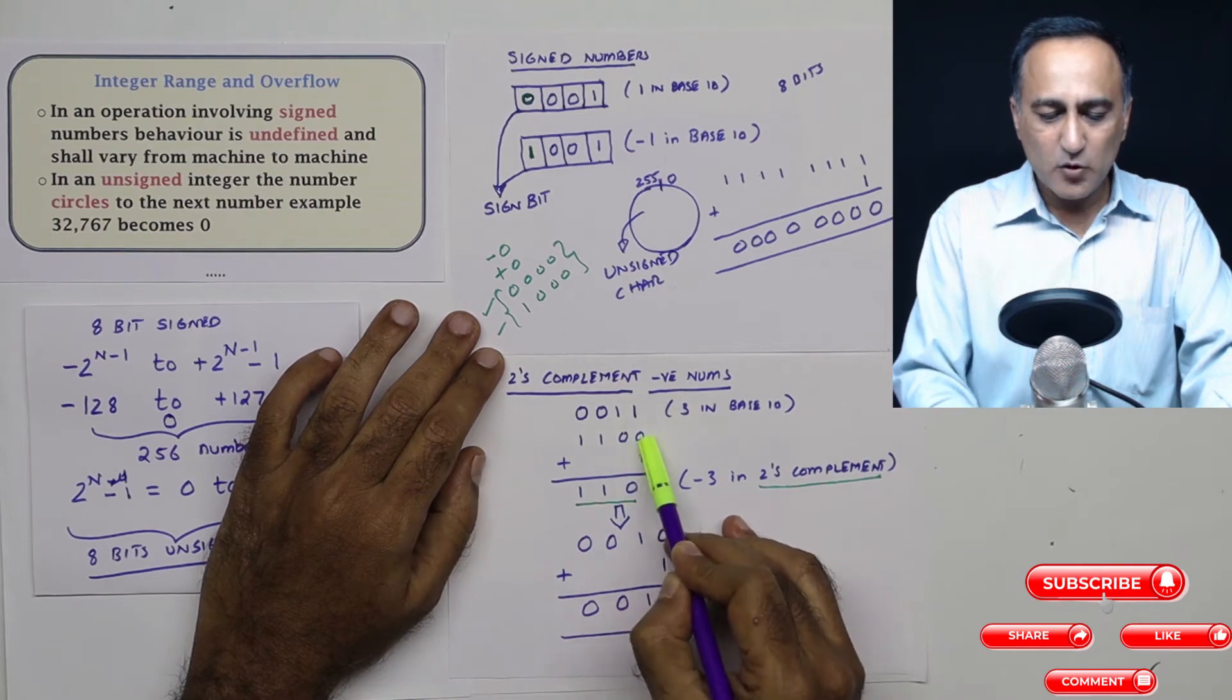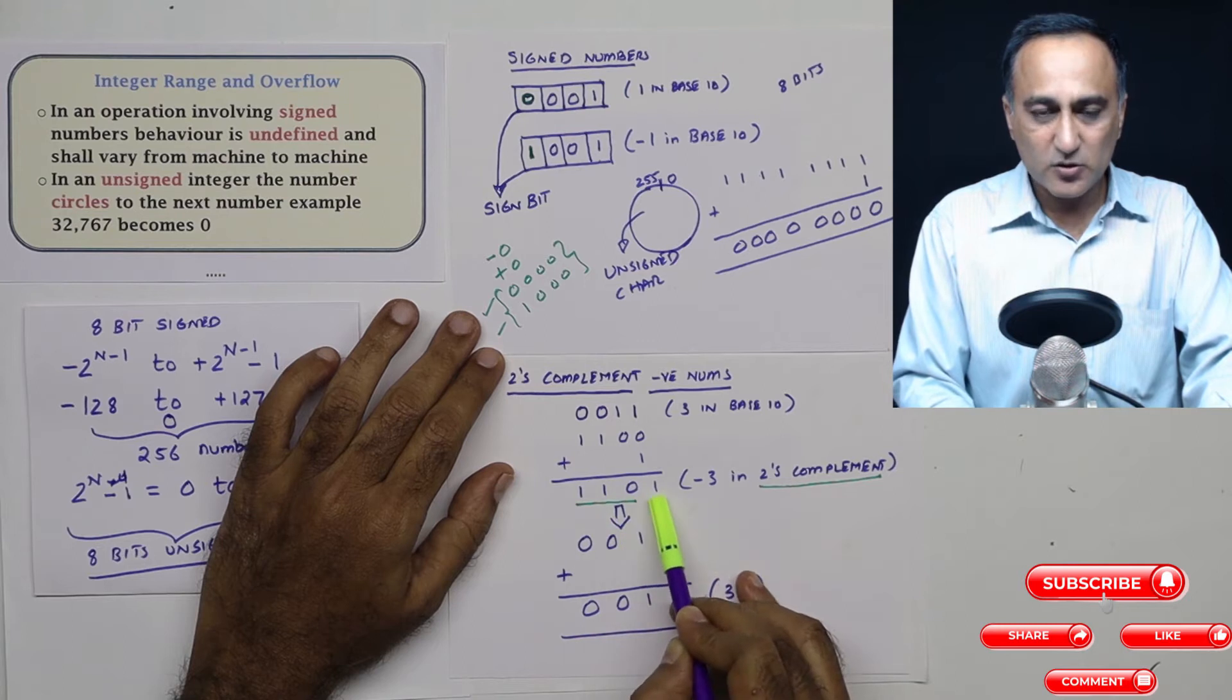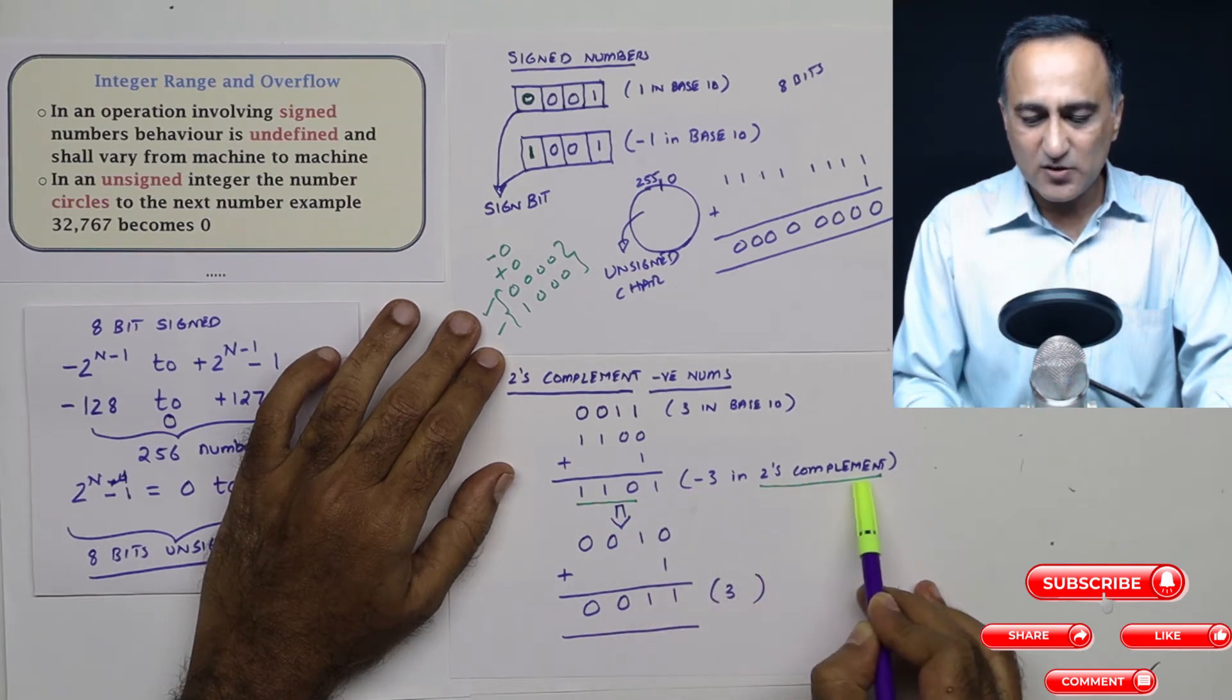To this line I'm going to add one, so it becomes 1103. This is nothing but minus three in two's complement.